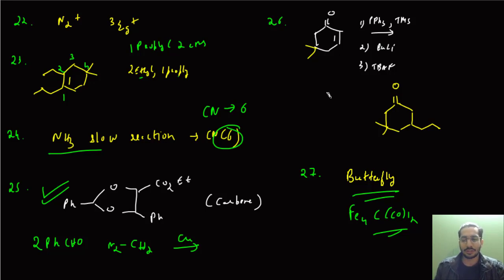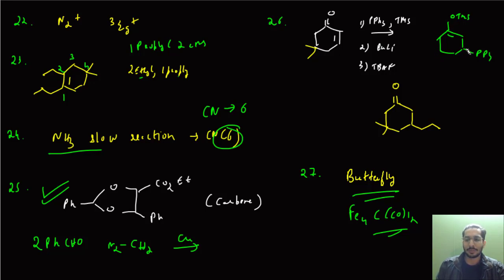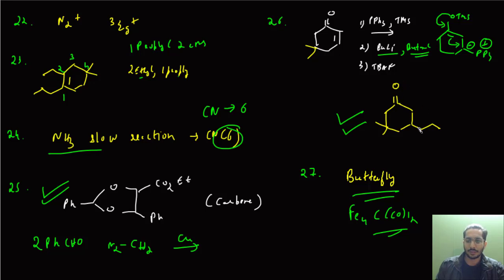There were two questions based on the Wittig reaction. In one of them, triphenylphosphine and a silyl protecting group were given. Phosphorus gets attached, forming an OTMS-protected intermediate. Then n-butyllithium is added — generating the Wittig reagent, since a positive charge is on phosphorus. Then butanal (the aldehyde) was given, and an alkene is formed. Then TBAF is given, which deprotects the silyl group. Following bond migration, you ultimately get the final product with a double bond.